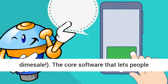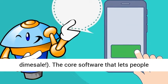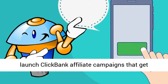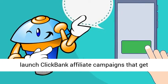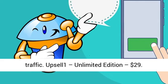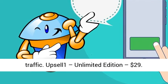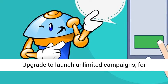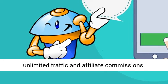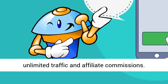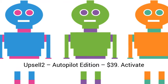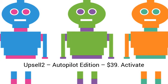Upsell 1 — Unlimited Edition, $29: Upgrade to launch unlimited campaigns for unlimited traffic and affiliate commissions. Upsell 2 — Autopilot Edition, $39: Activate 60x affiliate programs per day with over 1,500 campaigns instantly preloaded.